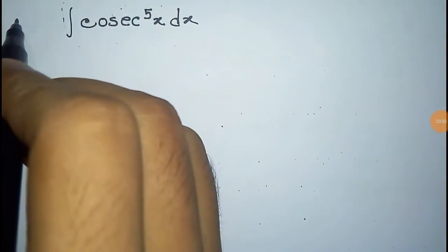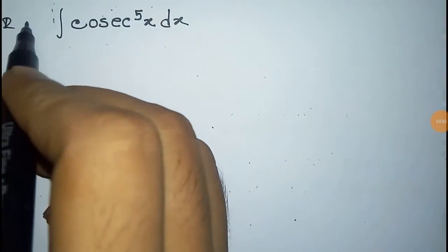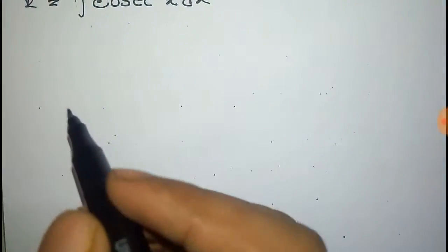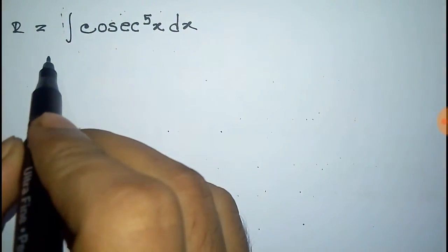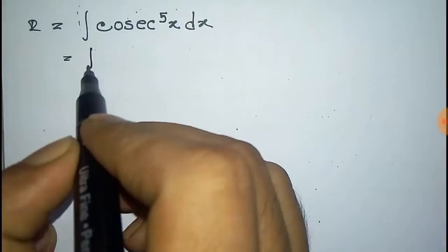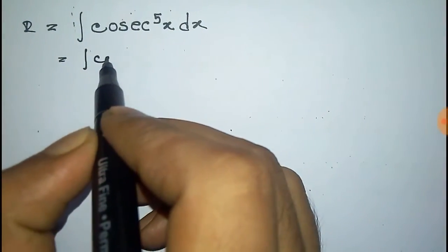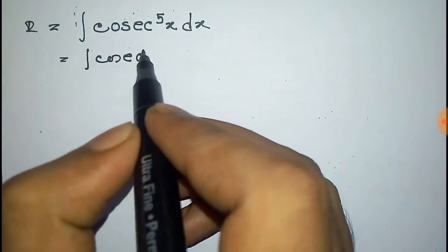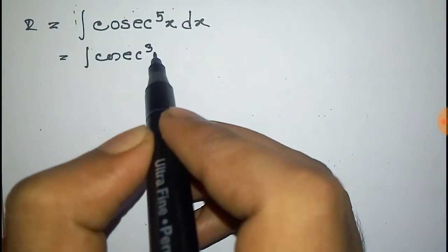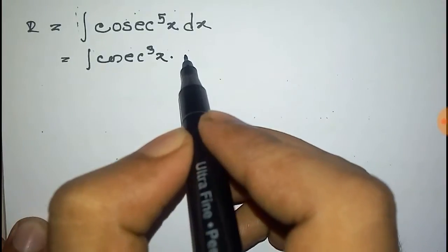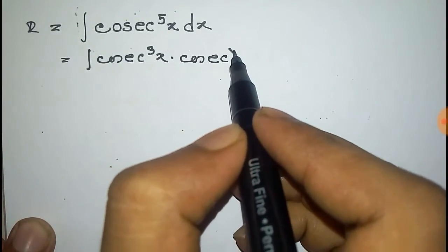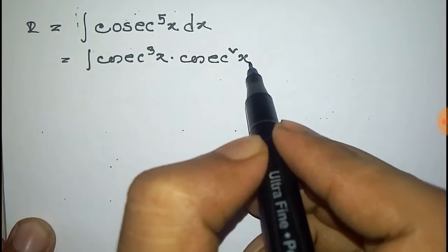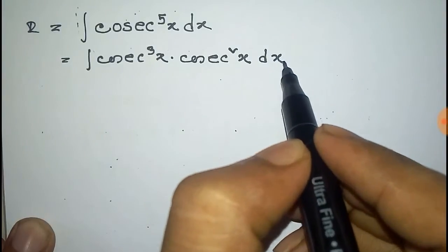We have to integrate cosec to the power 5x dx. We take I equal to the integration of cosec to the power 5x dx. We can write cosec to the power 5x as the product of cosec to the power 3x and cosec square x into dx.